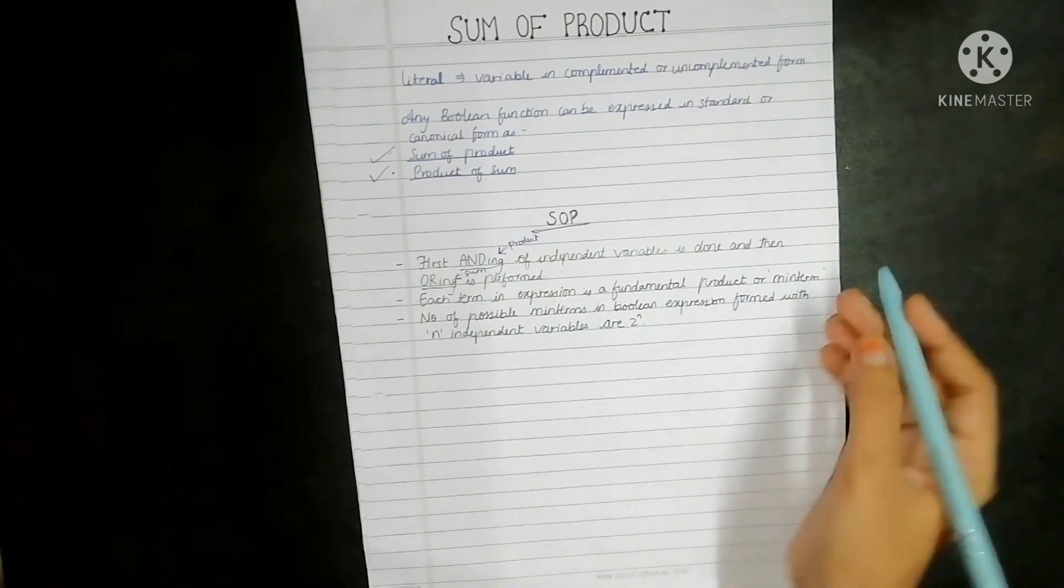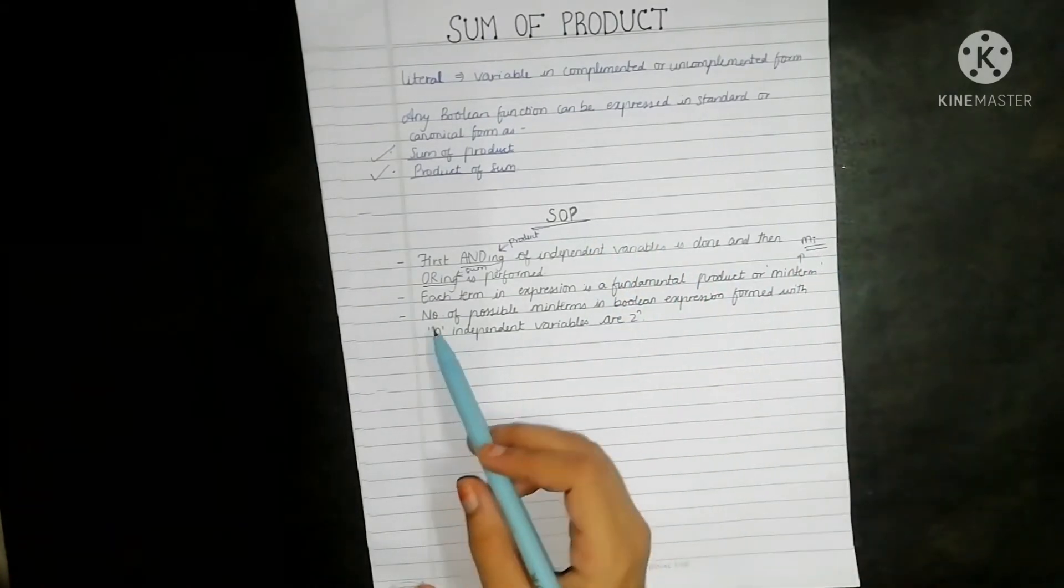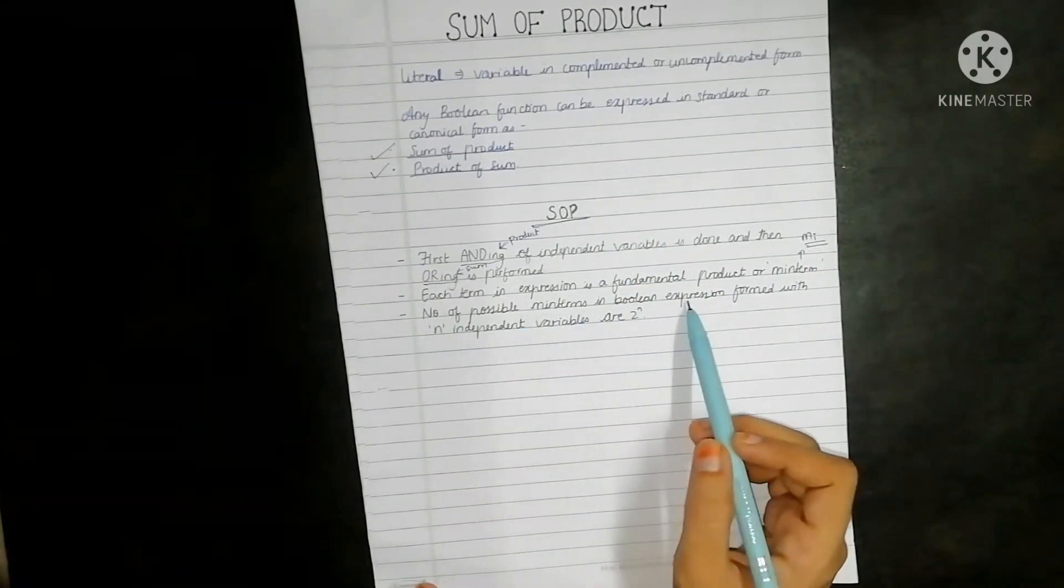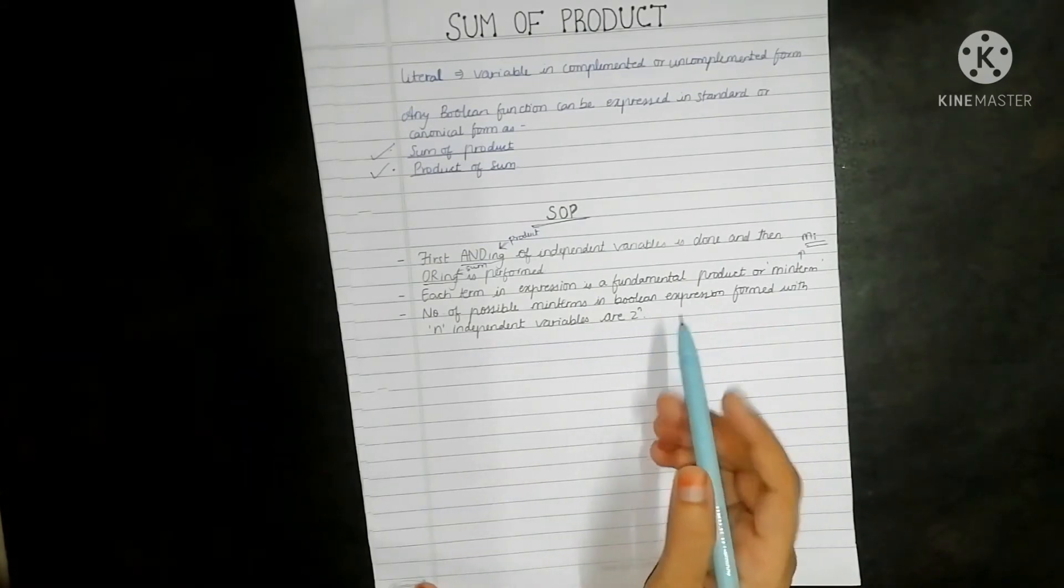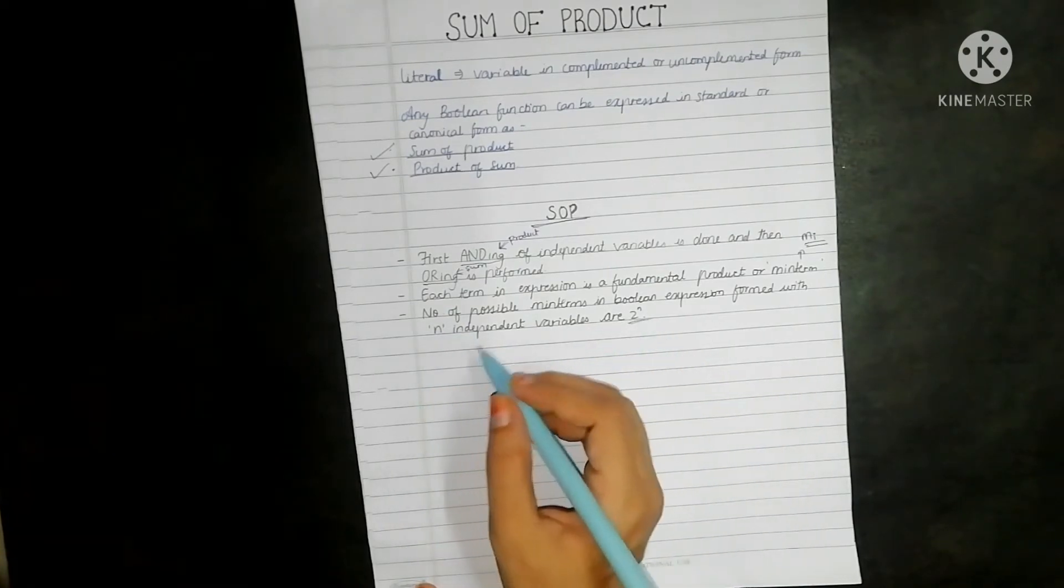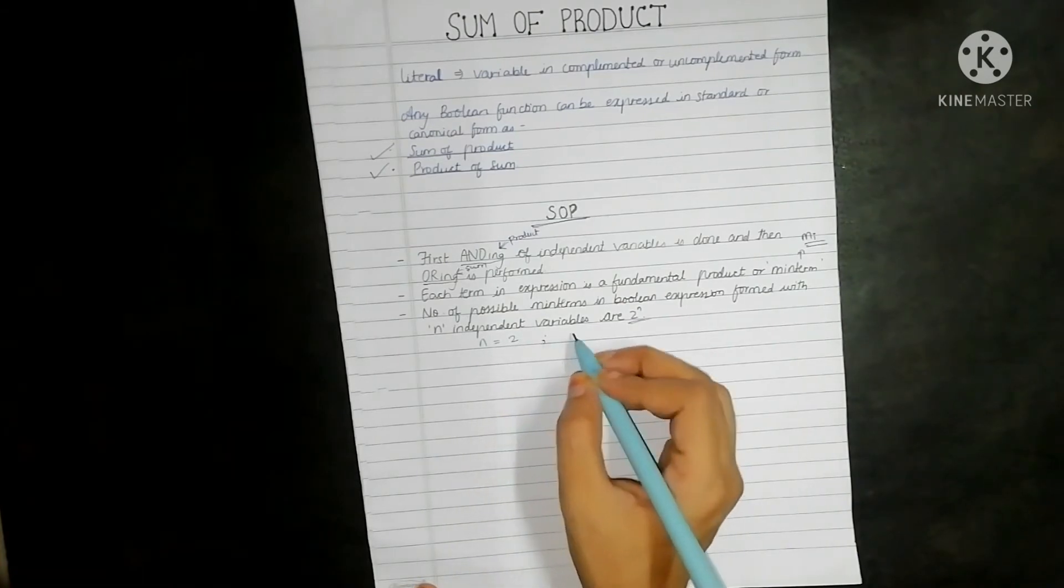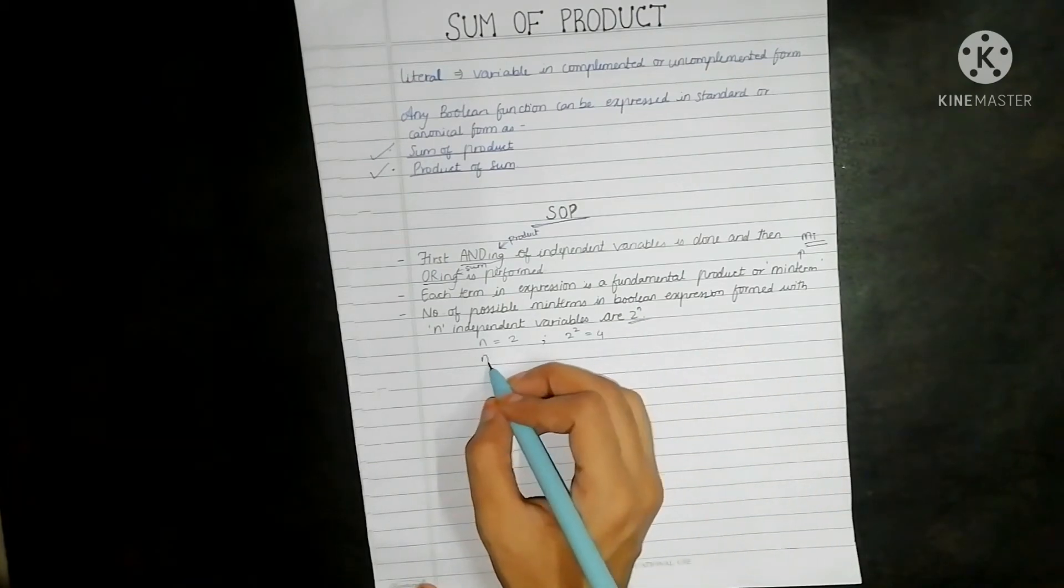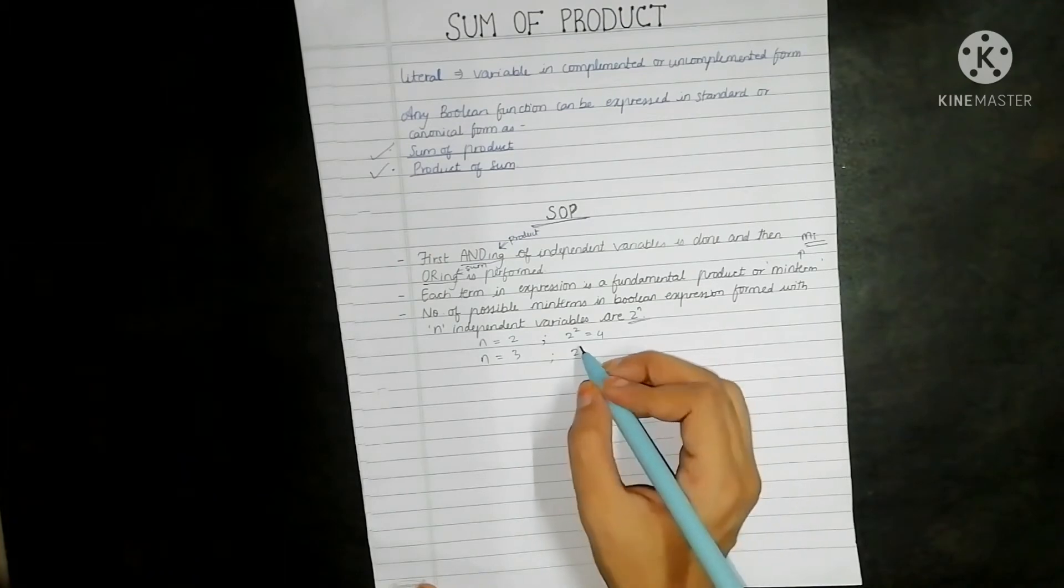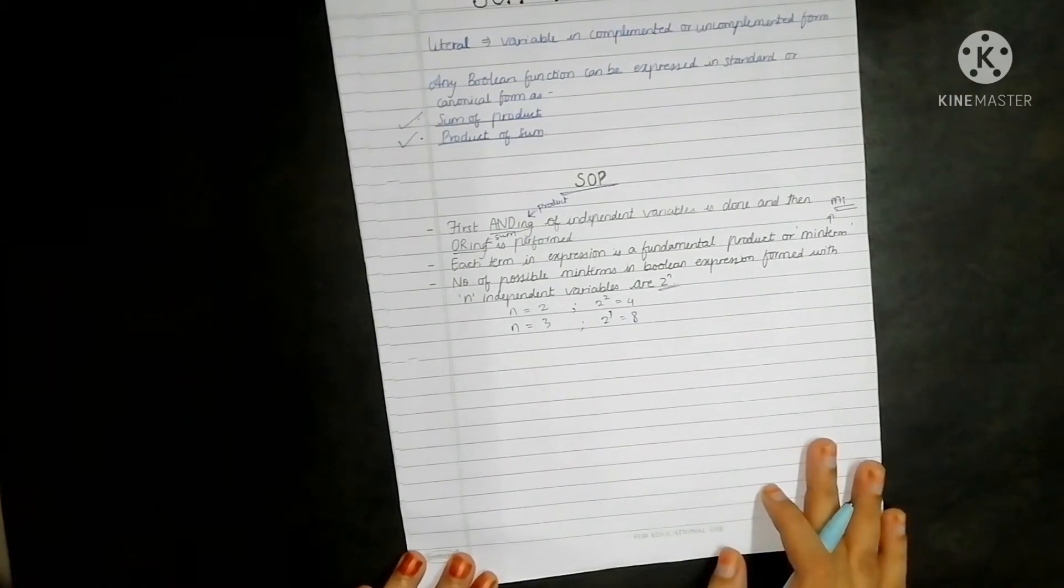This min term is represented by small m with the subscript i. For SOP we have to deal with min terms. The third point is number of possible min terms in Boolean expression formed with n independent variables are given by 2 raised to n. So if my number of variables equal to 2, then the number of possible outcomes is equal to 2 raised to 2, that is 4. If number of variables equal to 3, then the number of possible outcomes equals to 2 raised to 3, that is 8 and so on. Let's see one example of sum of product.